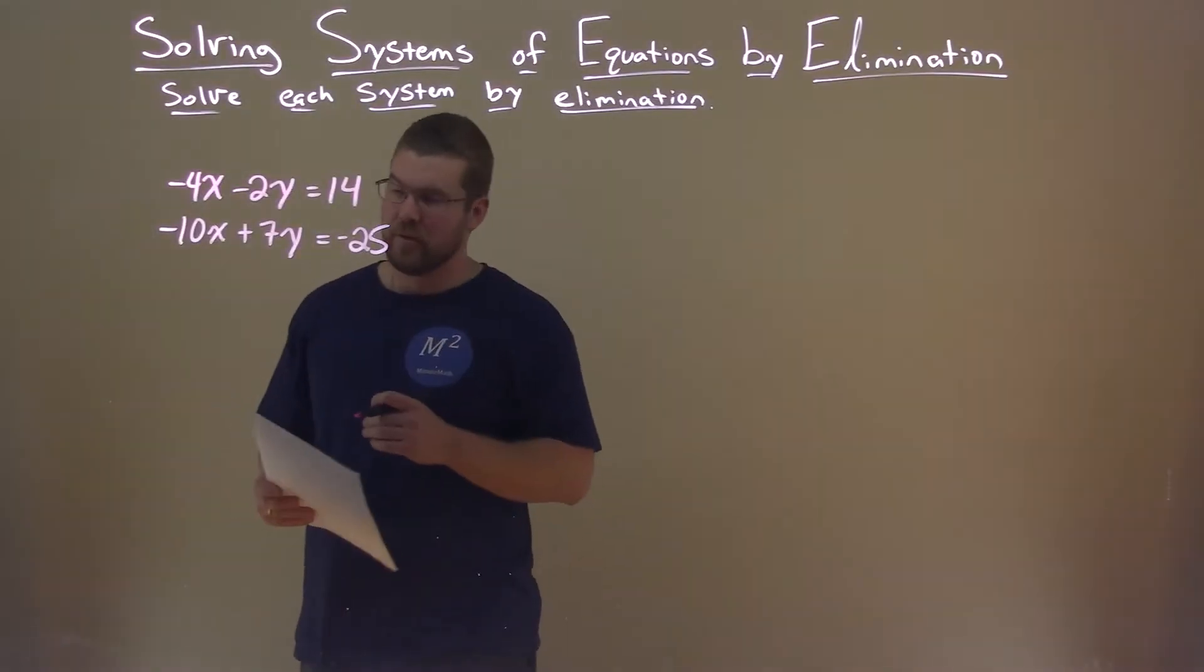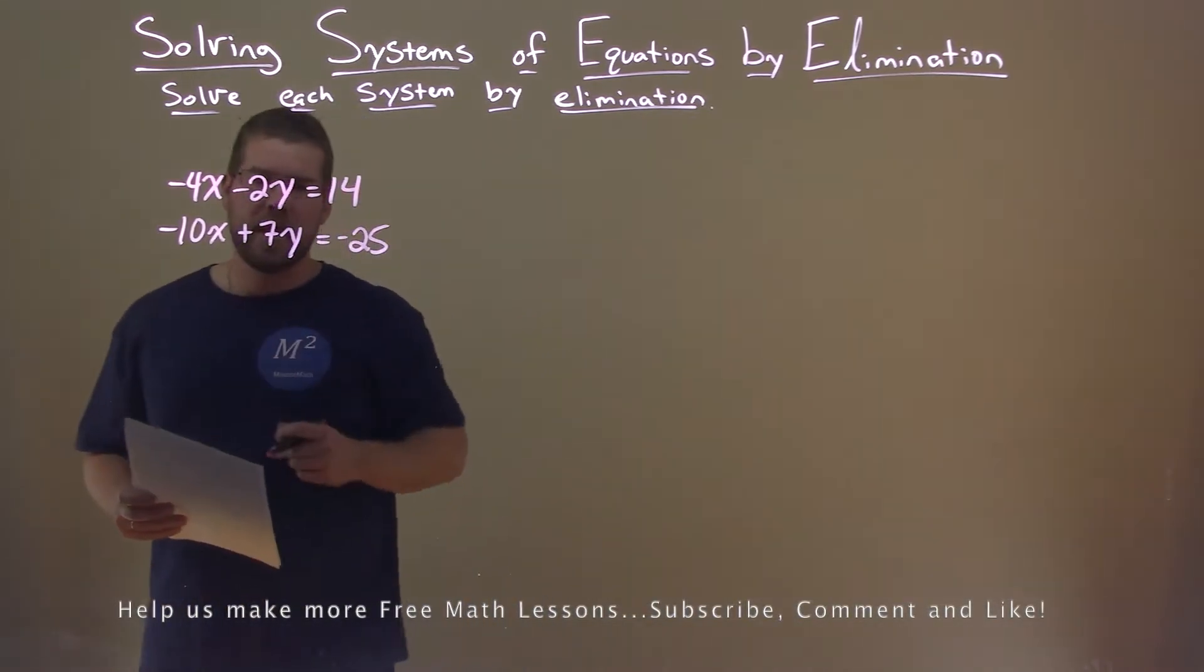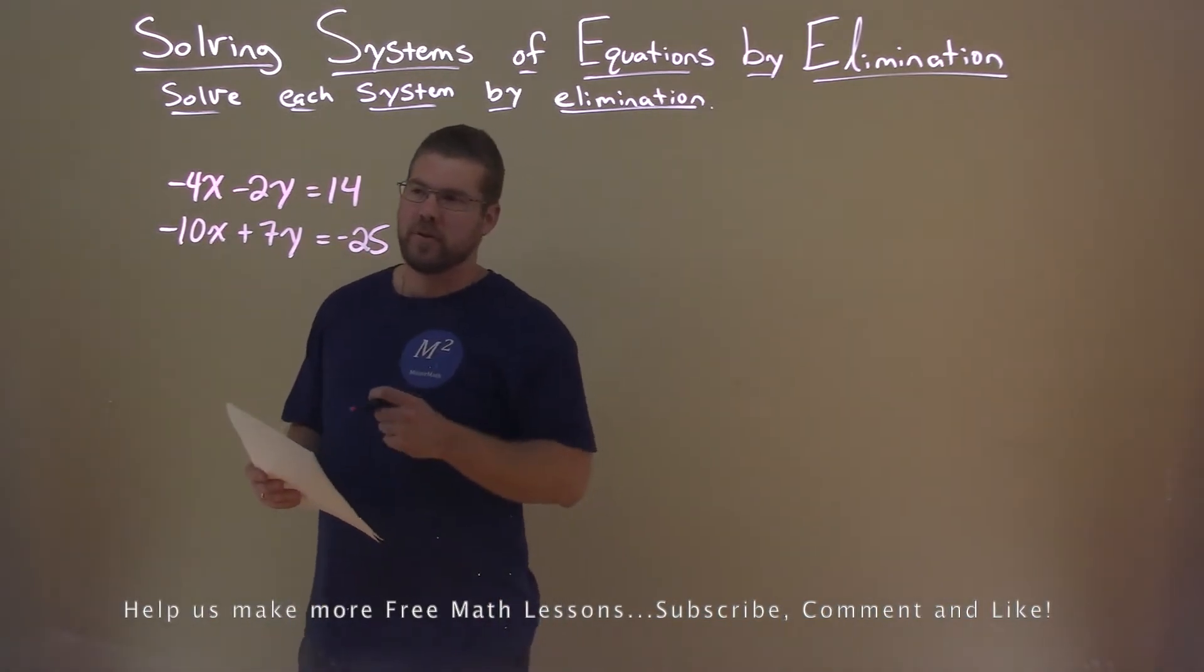We're given this problem: negative 4x minus 2y equals 14, negative 10x plus 7y equals negative 25, and we want to solve this system.